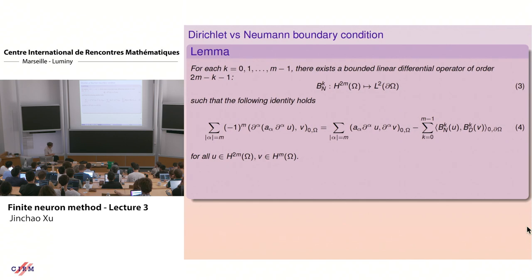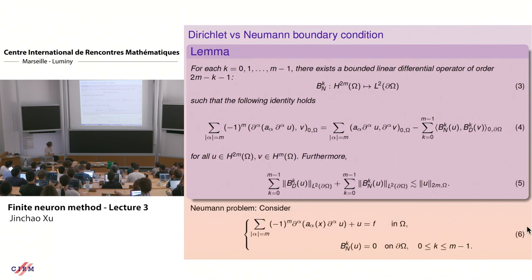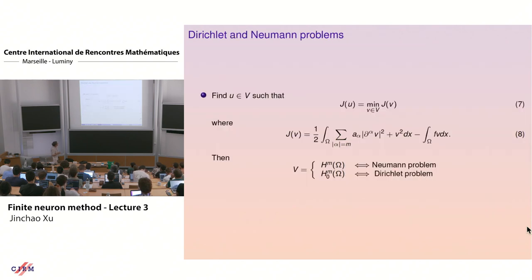You can prove these things; this boundary has all the trace theorems and that stuff. For the Neumann boundary value problem you don't have any boundary condition to impose explicitly, and for the Dirichlet problem you have the H_0^m space — that's what will be the loss function, or risk function — we're going to minimize that.